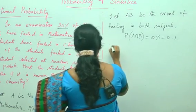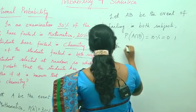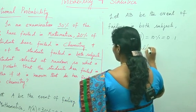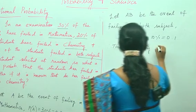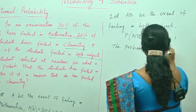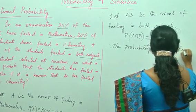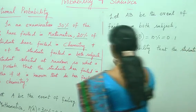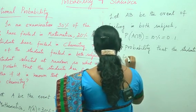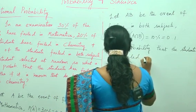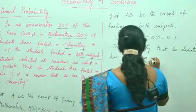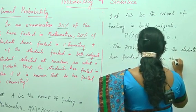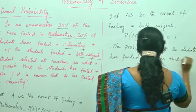Therefore, the probability of the final statement also should be written like this. The probability that the student has failed in maths, that he has failed in chemistry.